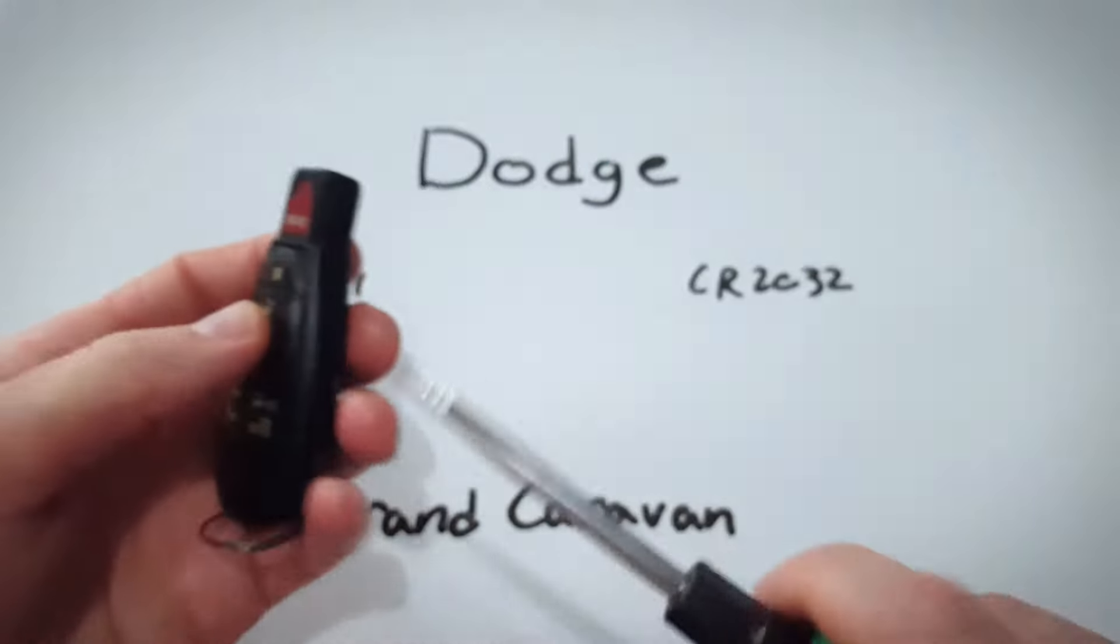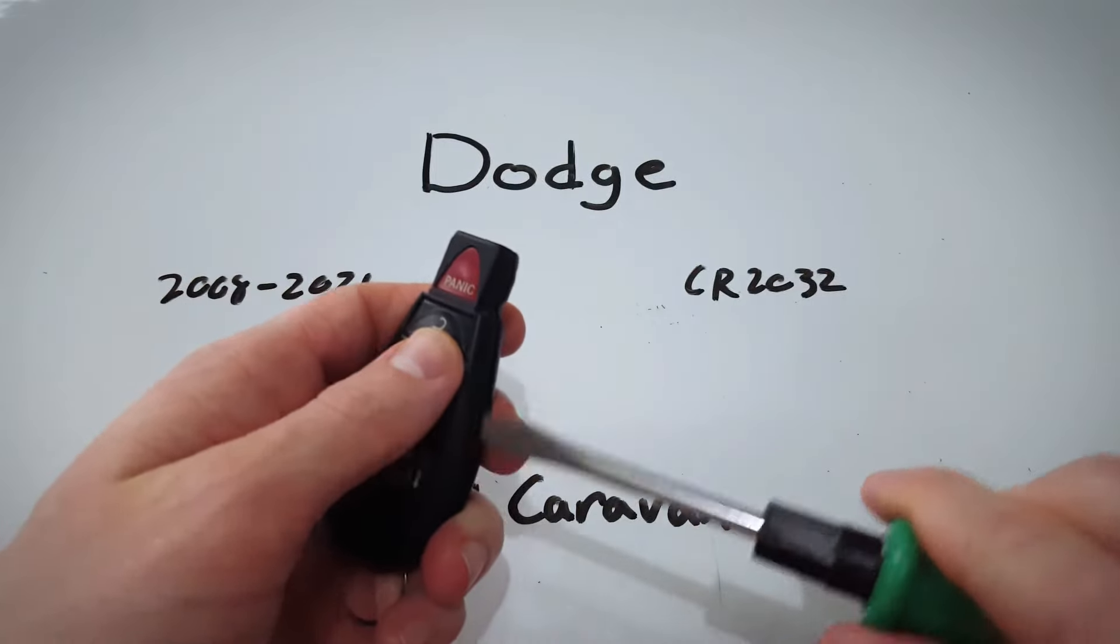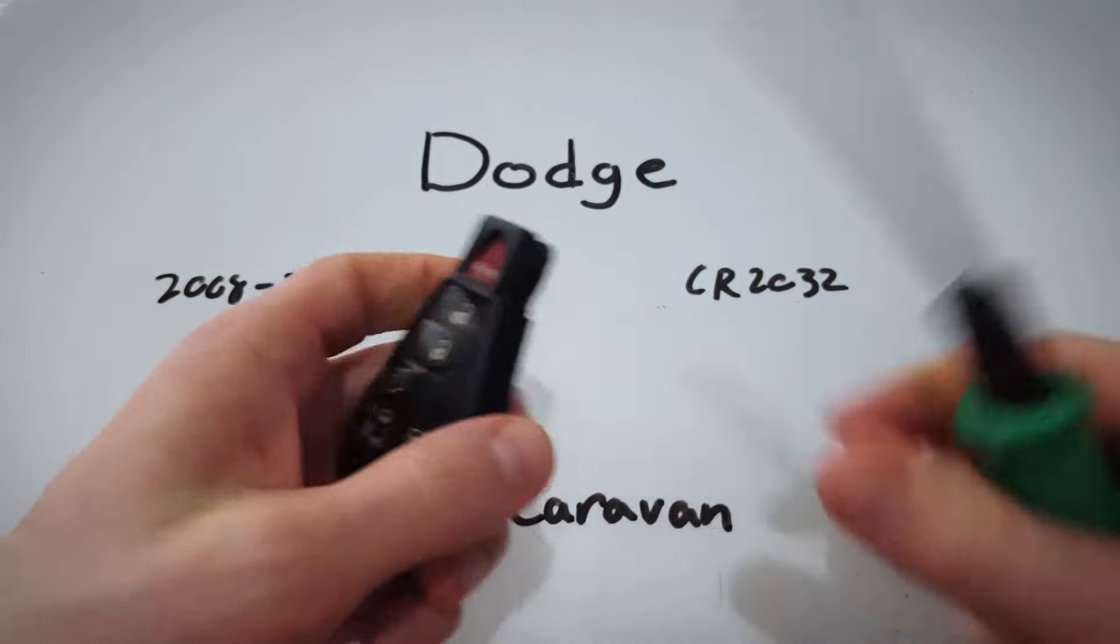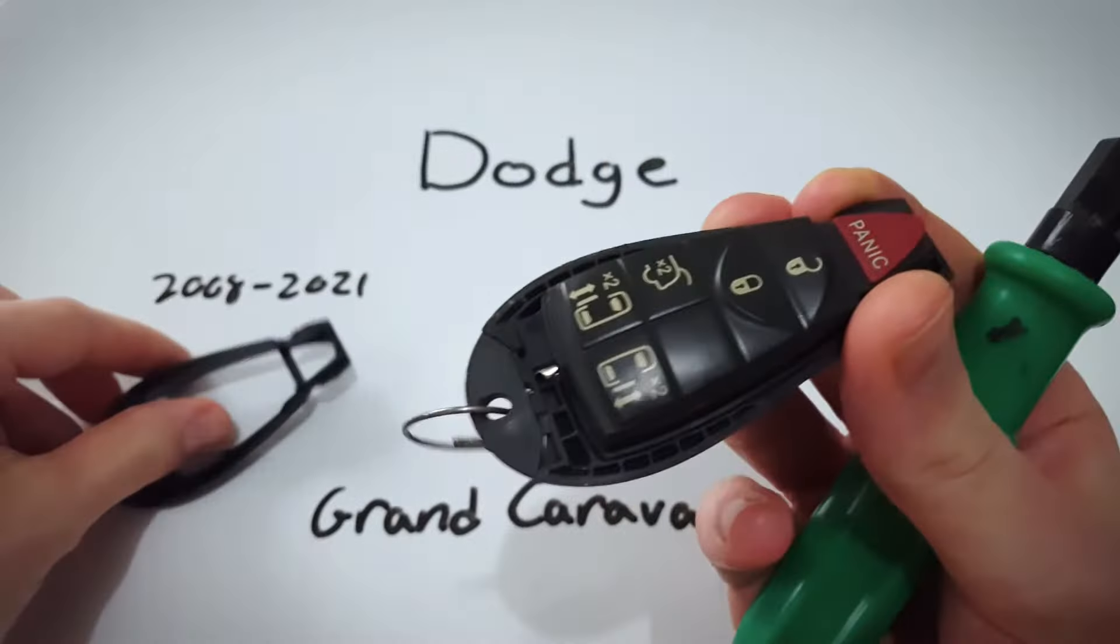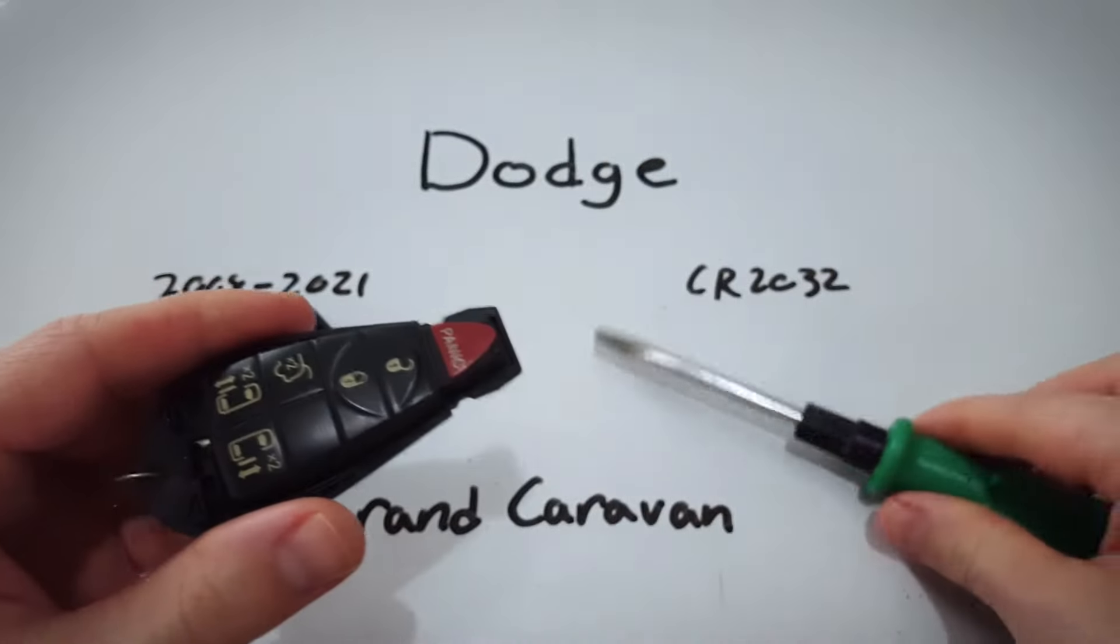You see that opening? I'm going to just twist down in that opening, working my way down until this top part comes right off like that. You can set this aside now.